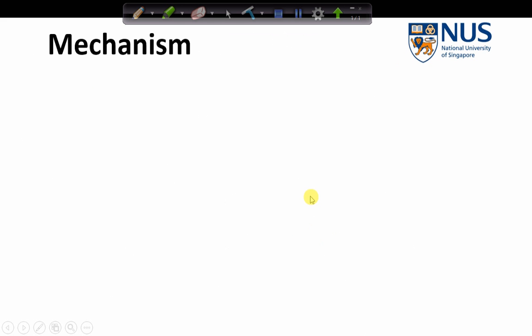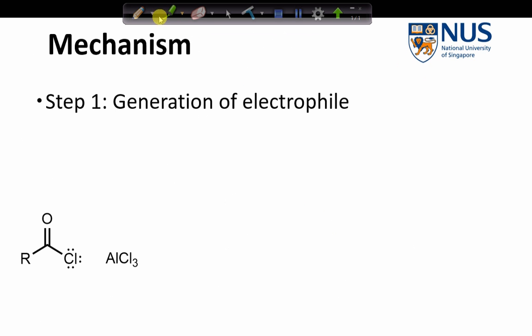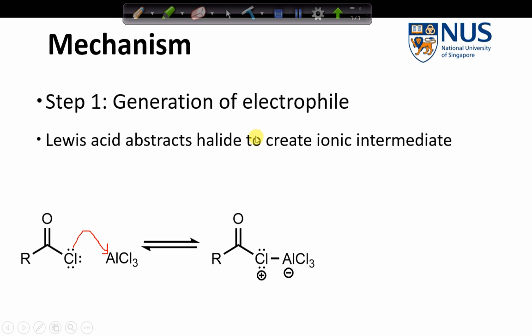So again, let's look at the mechanism. This is very similar to the alkylation that we saw before. The first step is generation of the electrophile by abstraction of the halide by the acid catalyst. We then form our intermediate as shown.